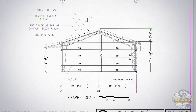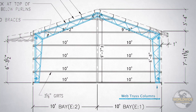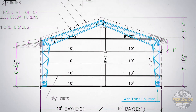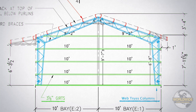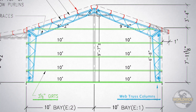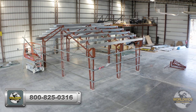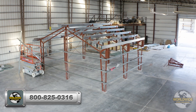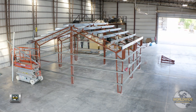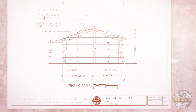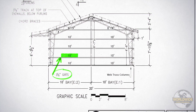It is important to note that in this example, we are using Worldwide Steel Buildings web truss columns and roof trusses with 6-inch purlins on the roof and 3-5-8-inch girths on all walls. If your building kit has different components than noted, then the dimensions you will need to use may vary from this video. Please be sure to verify the dimensions against your W drawings.